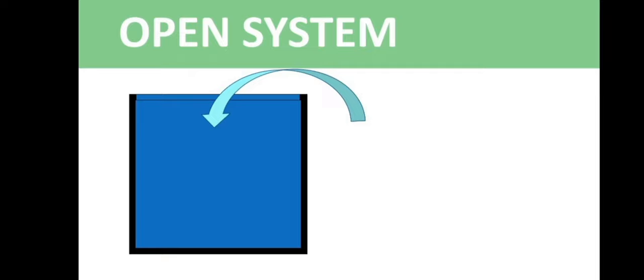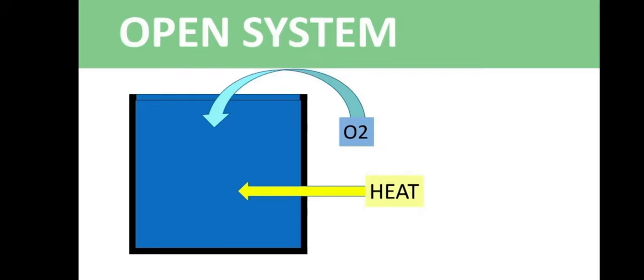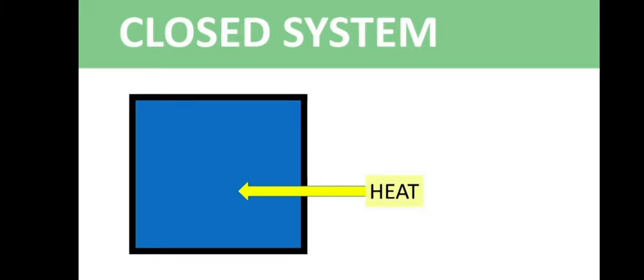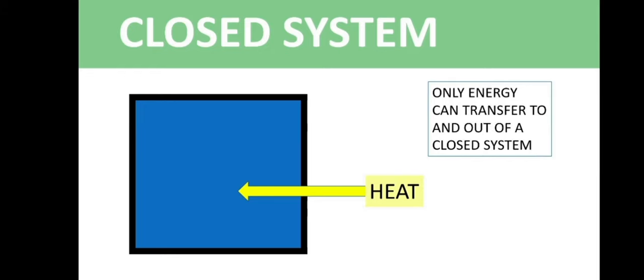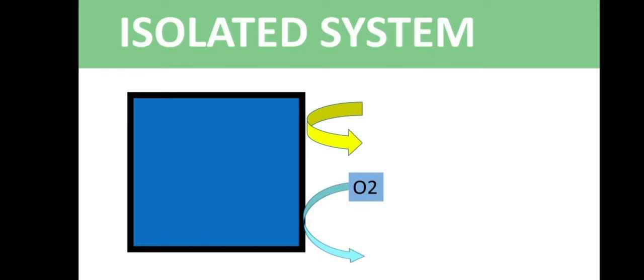In an open system, matter can enter — for example, oxygen from the air can go inside — and heat energy can also flow in. Therefore, both matter and energy can transfer into an open system. In a closed system, matter cannot flow in or out, but energy can still flow in and out. In an isolated system, neither energy nor matter can enter or leave, so the mass and total energy within an isolated system remain fixed and do not change.